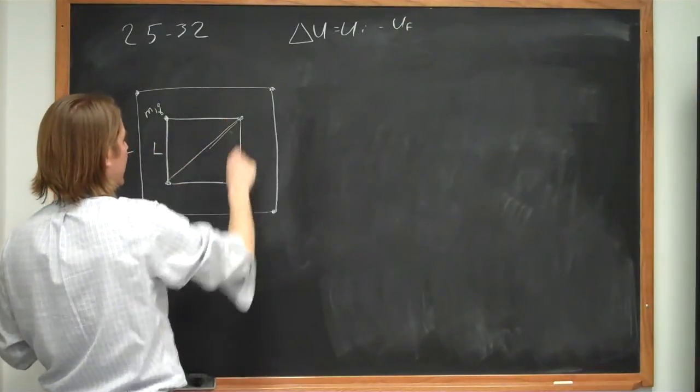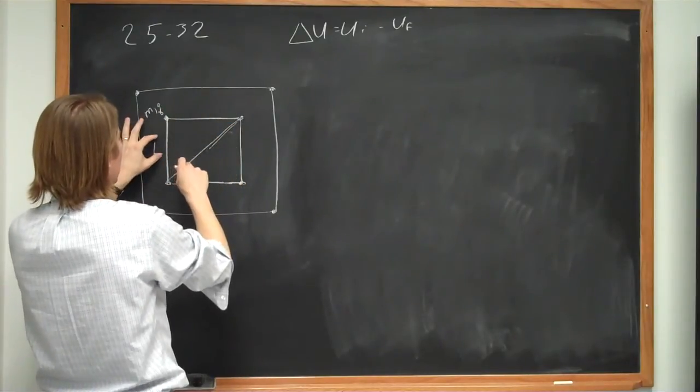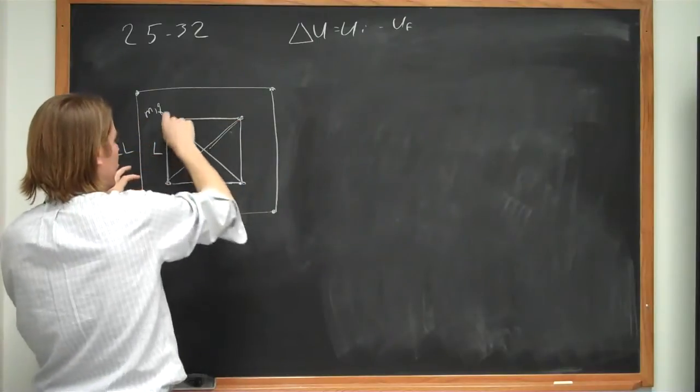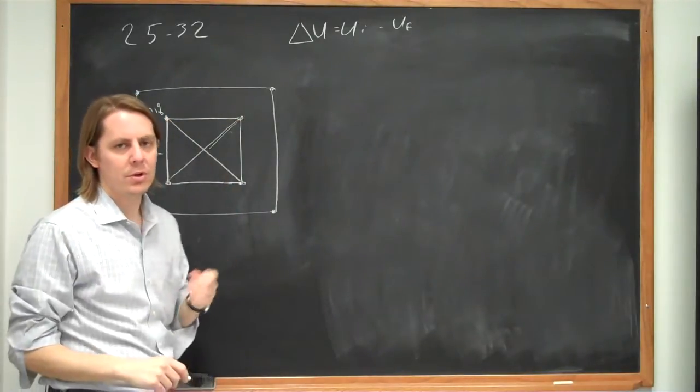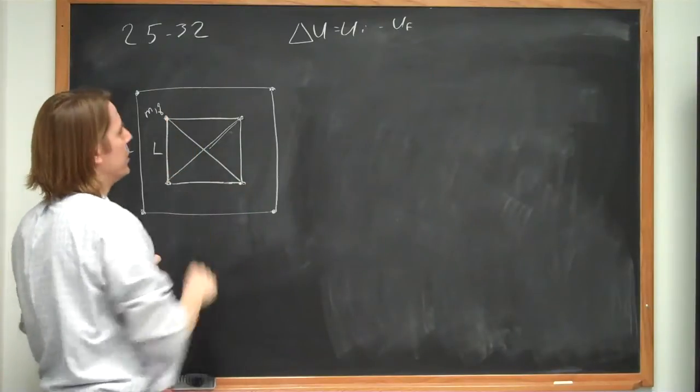Well, there's four sides. So you have four at a distance l. And then you have two across the diagonal. So you have two at a distance of the square root of 2l.